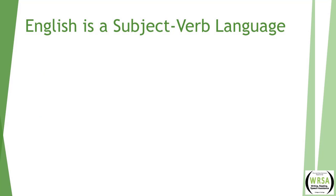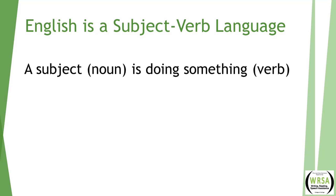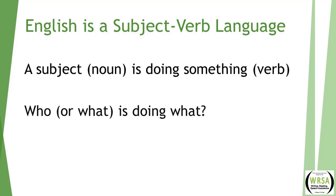English is a subject-verb language, and the pattern of most sentences is that of a subject doing something. Ask yourself: who or what — the subject — is doing what — the verb. It's important to identify the subject, which is the who or the what, and the main verb, which is what the subject is doing. There will be other nouns and verbs in your sentences, but they will support or qualify the main subject and the main verb, which is the action the main subject is taking.